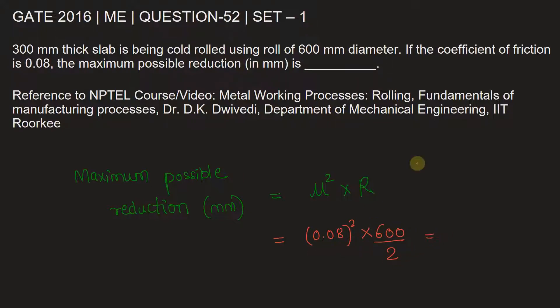Putting this in the calculator, you can directly calculate this to be 1.92 mm. So our answer here is maximum possible reduction in millimeters is 1.92.